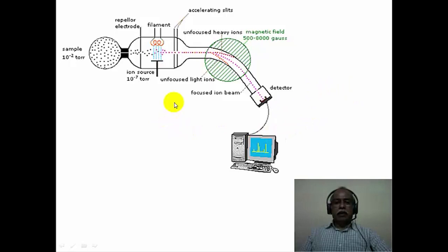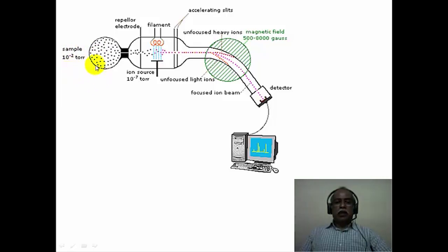This is a simple diagrammatic representation of a mass spectrometer consisting of a sample chamber in which the sample is produced in the vapor phase, then an ionization chamber, an acceleration zone, a magnetic sector analyzer, and a detector connected to the computer. In the sample chamber, the sample is introduced and brought to the gas phase by applying a vacuum of 10 to the power minus 2 torr or so. Most organic compounds are volatile; those which are not volatile are normally heated in the sample chamber to bring sufficient vapor pressure into the gas phase so it can be pumped into the ionization chamber.